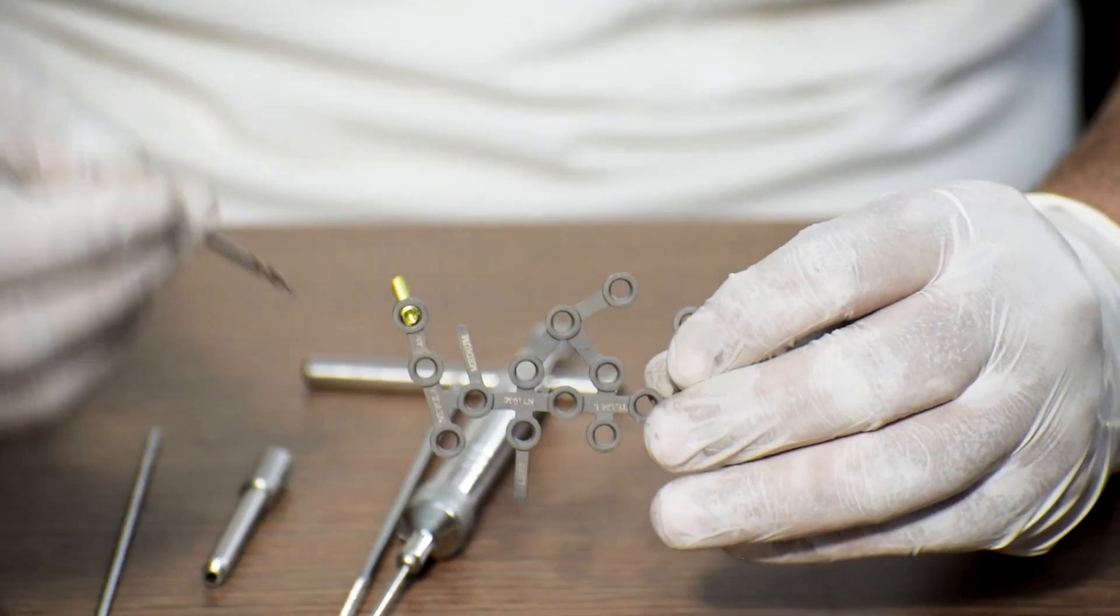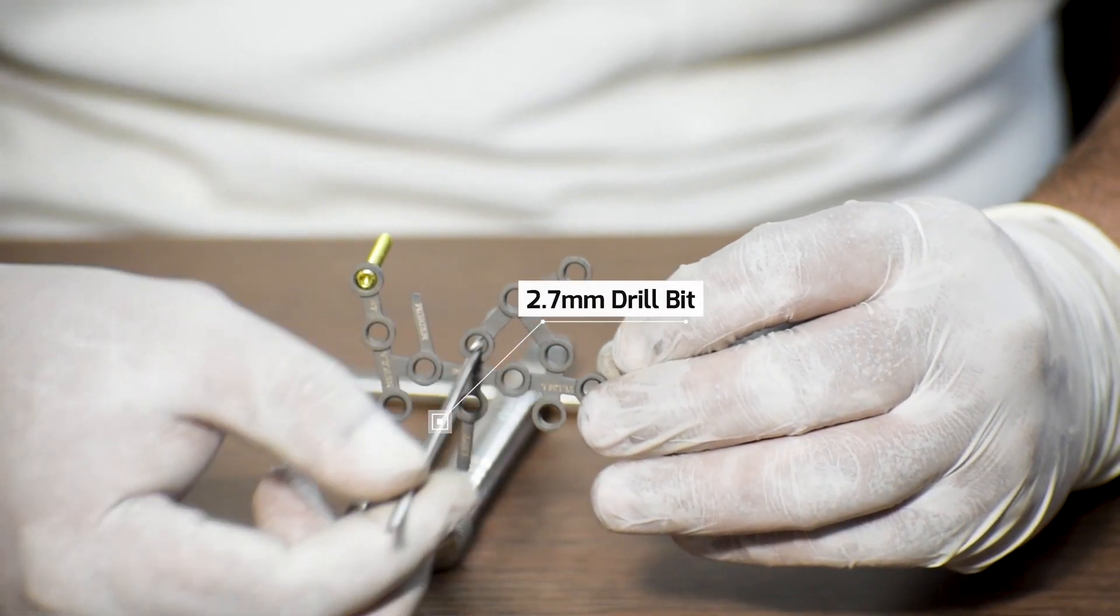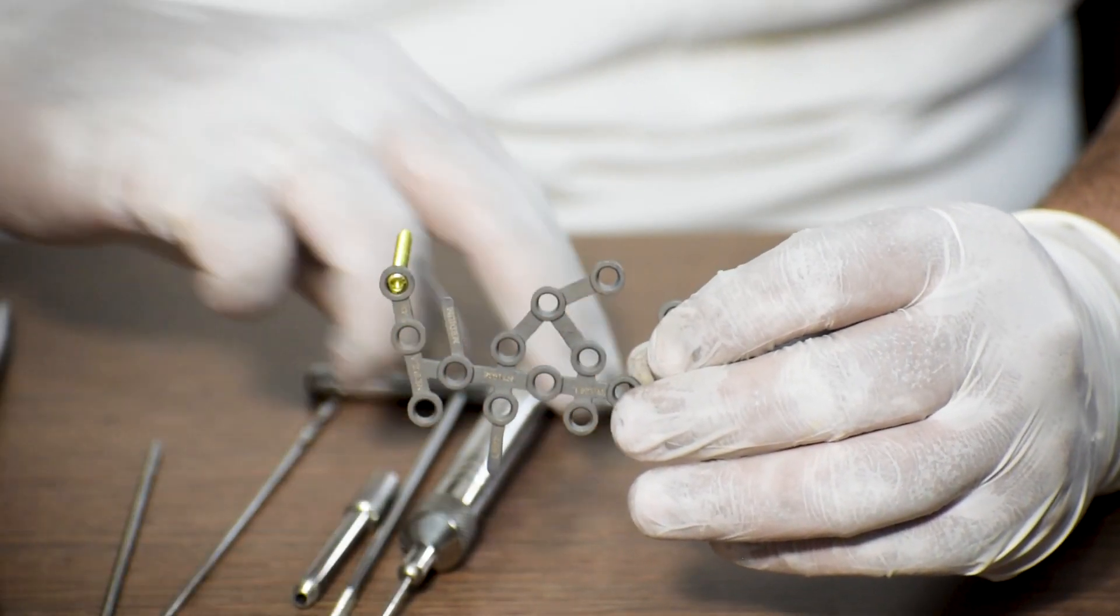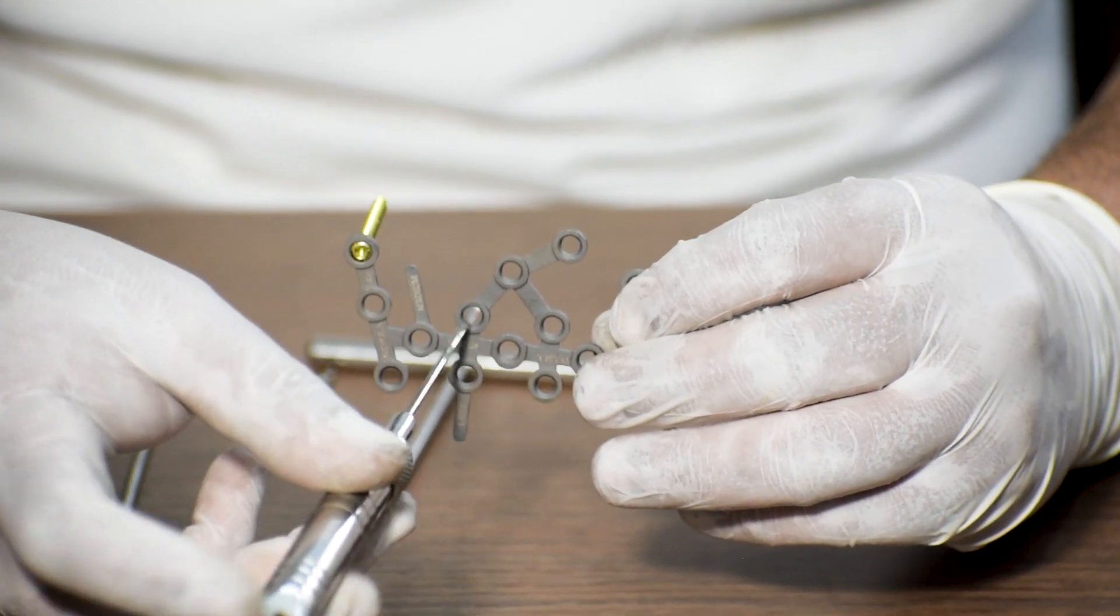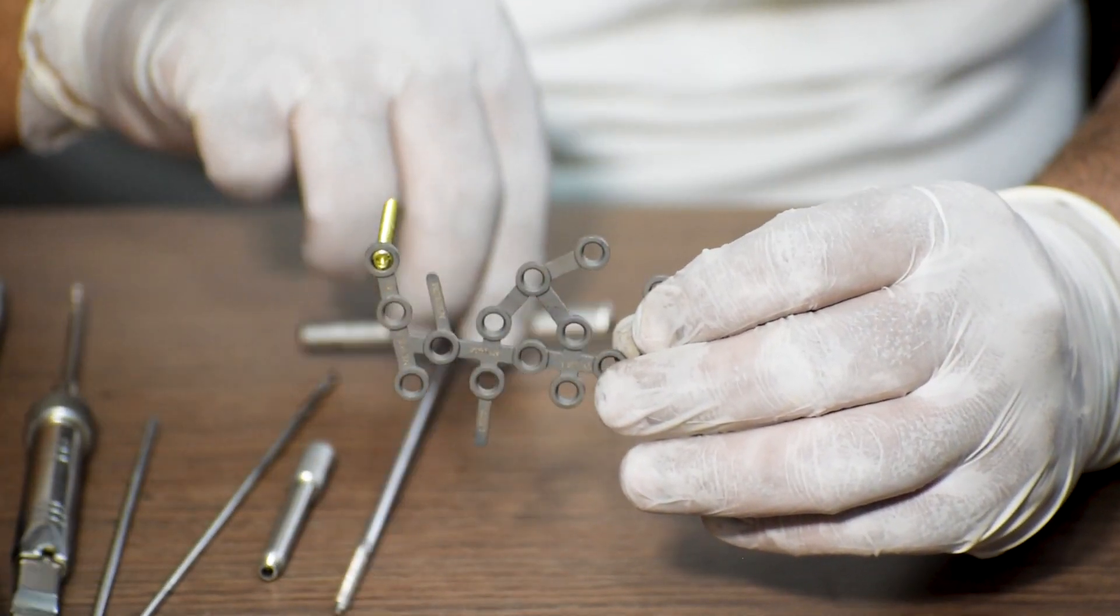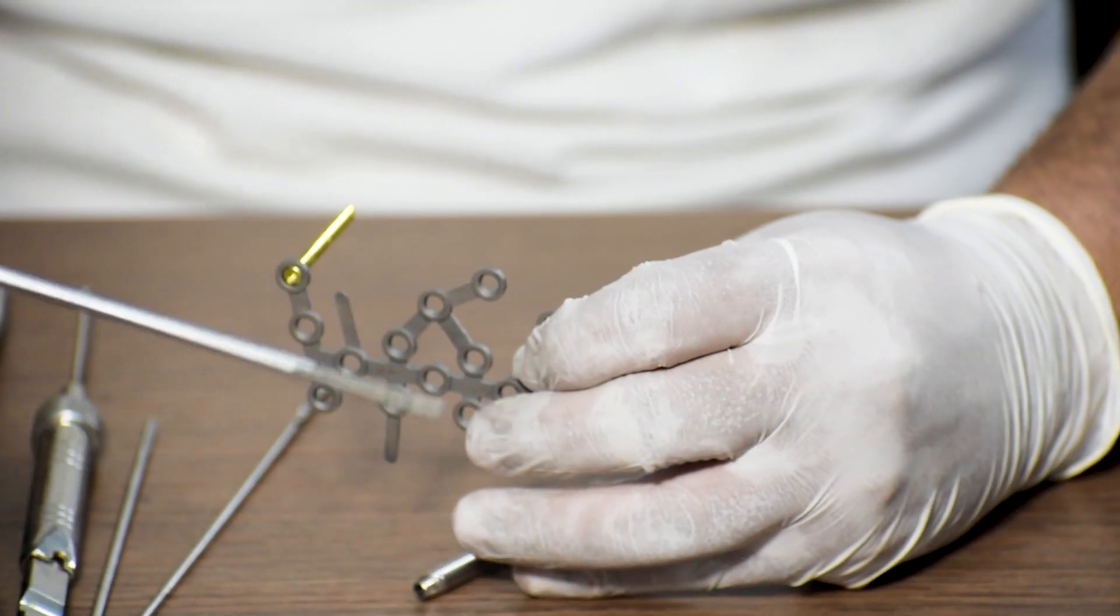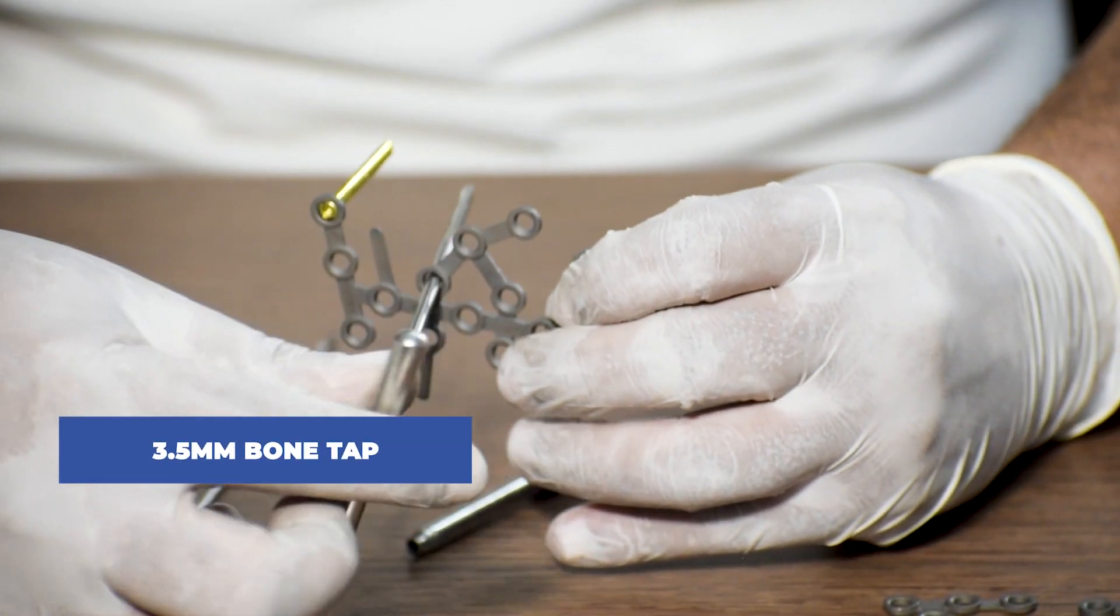If non-locking screws are needed to be fixed as well, we will take a 2.7 mm drill bit and drill through this hole. Again we use the depth gauge to measure the length of the screw needed to be fixed. After this, if required, we will use a 3.5 mm bone tap to make the entry of the screw smoother.